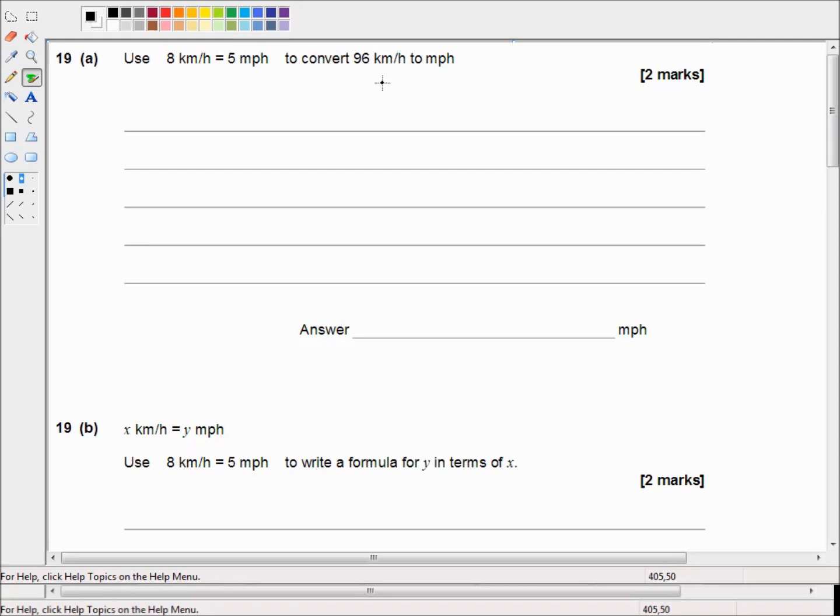So we've got 96 kilometers per hour. So 1 kilometer per hour is equal to 5 over 8 miles per hour. I just divided both sides by 8 on that equation.